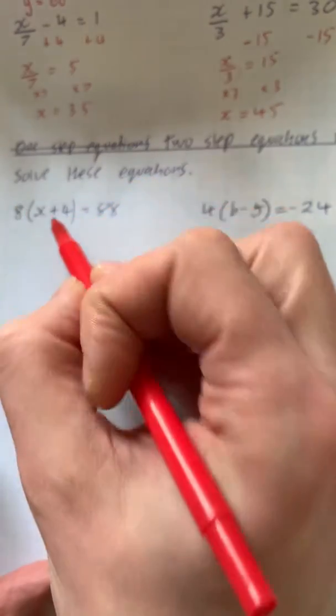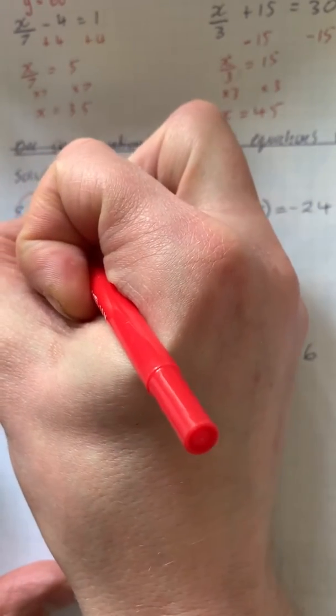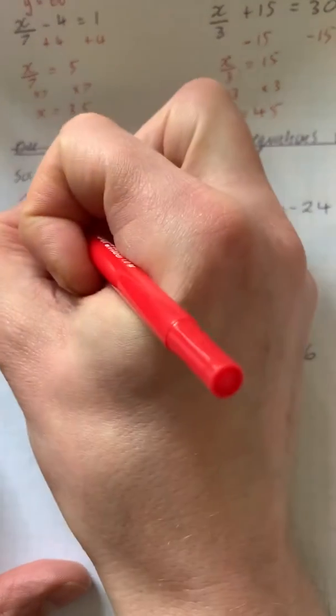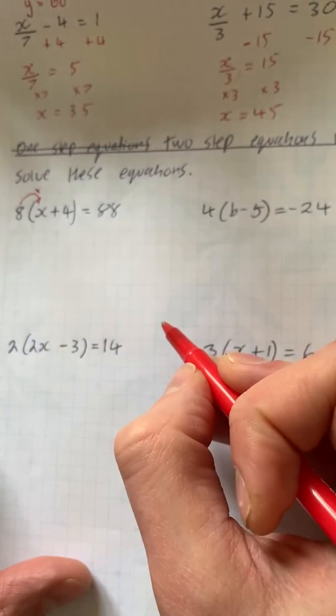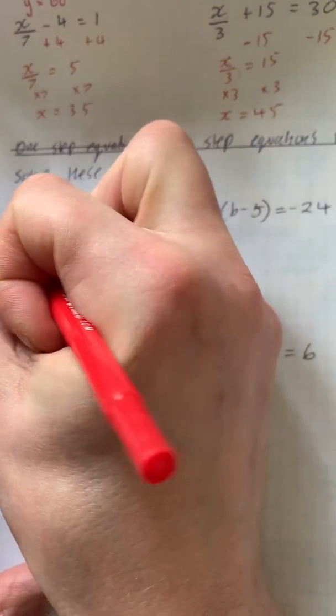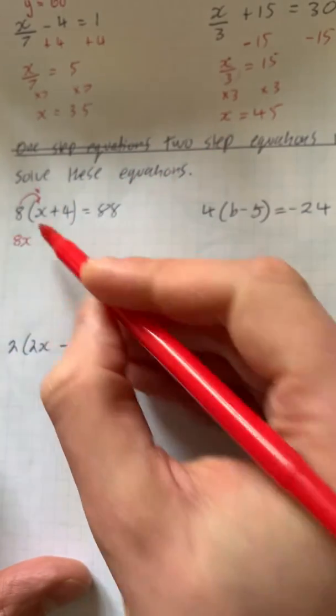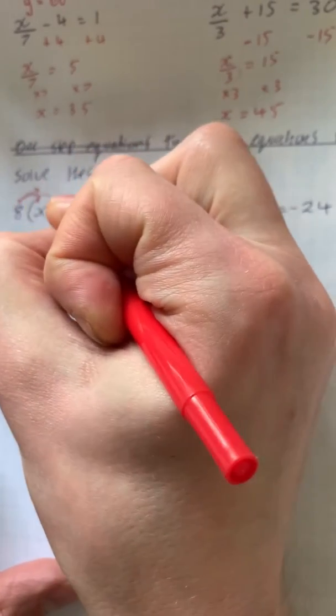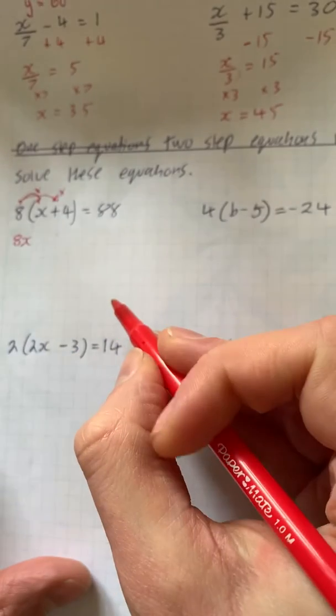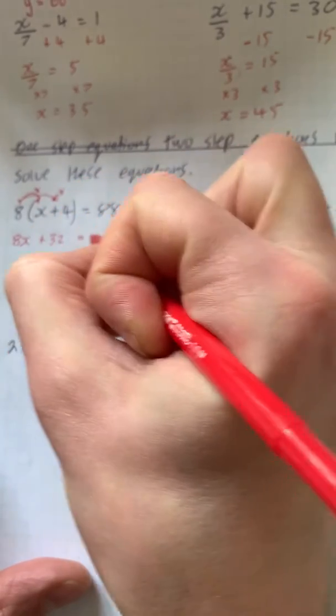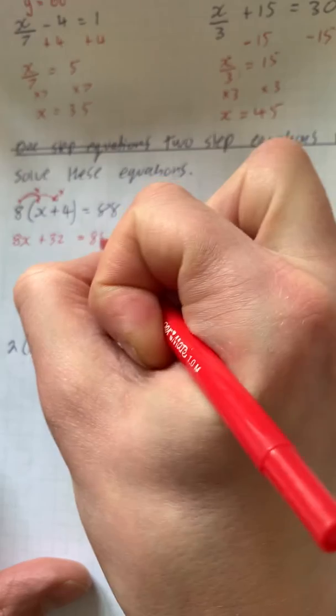Now what we mean by expand the bracket is whatever's on the outside we times with what's on the inside. So 8 times x is 8x, 8 times 4 is 32, and we've got an answer of 88.